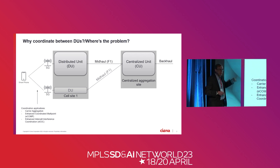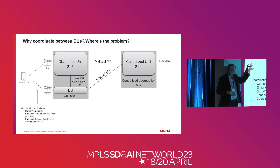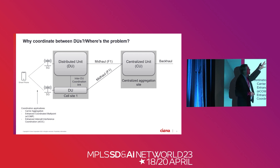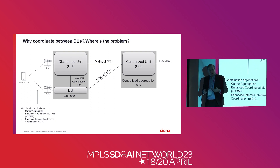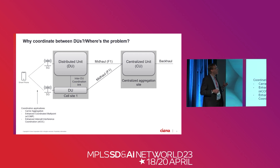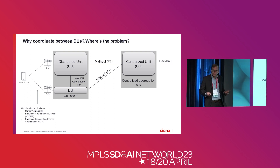They need to be coordinated functionally as well. With the particular mobile vendor we were working with, they chose to do that with an inter-DU coordination link. To the best of my knowledge, that doesn't exist in 3GPP. However, that was how they made it work in the practical equipment they actually had. Therefore, that was the transport requirement we were faced with.